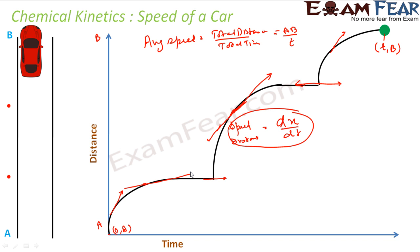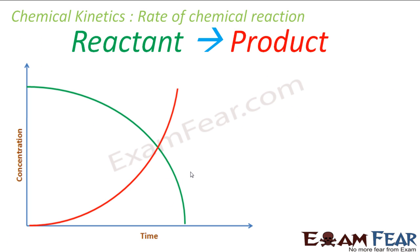Similarly, in the reaction also, we will find the average rate of reaction and instantaneous rate of reaction. Just as a car has average speed and instantaneous speed, a reaction also has average rate and instantaneous rate. In a typical reaction, there is a reactant on the left-hand side and a product on the right-hand side. The concentration of reactant (green) goes down as time increases, and the concentration of product (red) increases. That is a typical concentration-time graph for a given reaction.